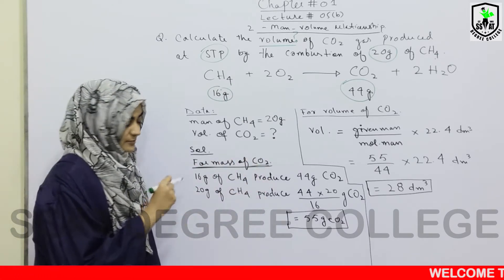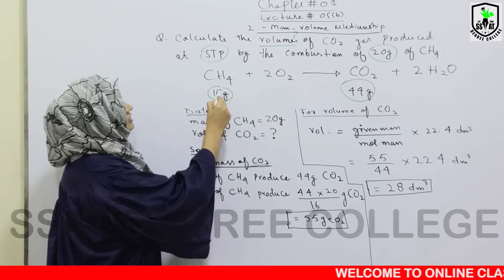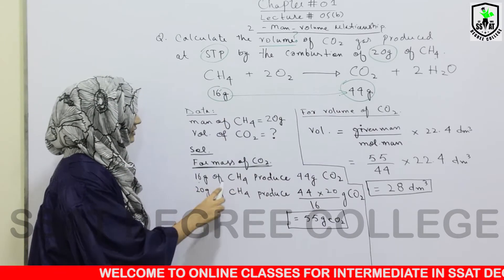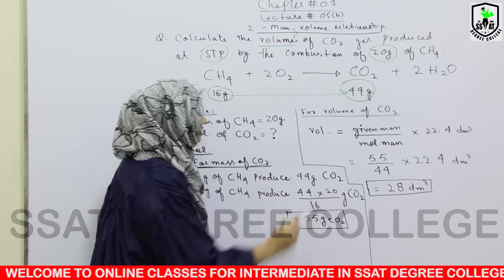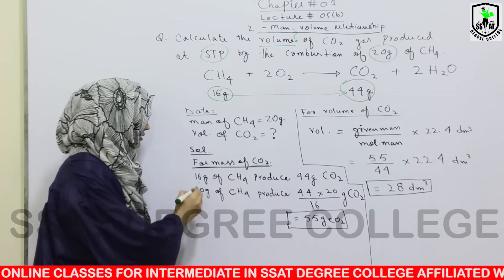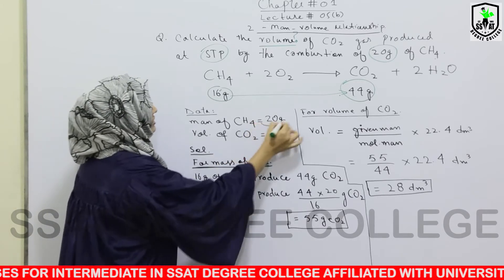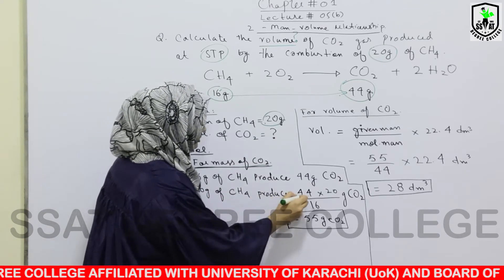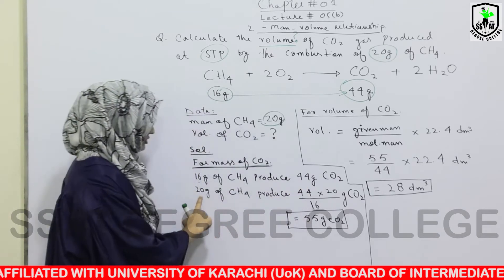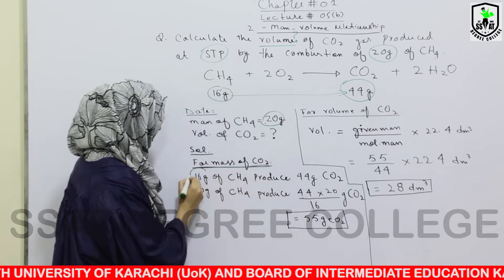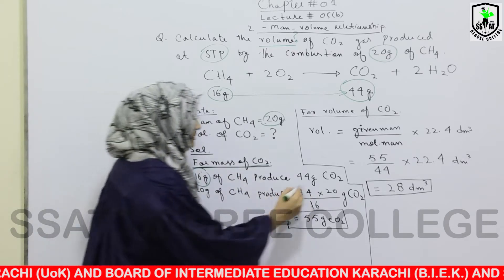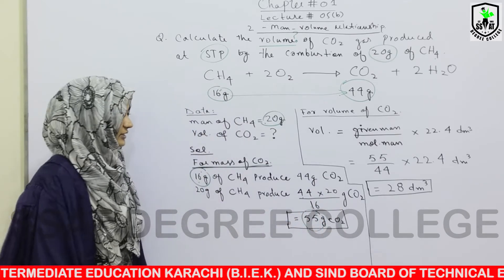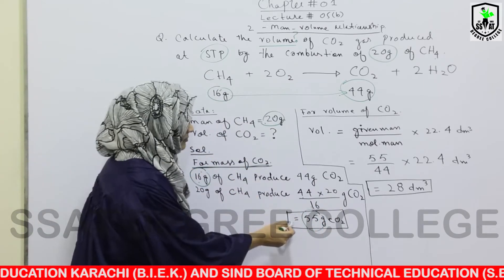Mass-mass relationship के according, जब हम equation देख रहे हैं — 16 grams methane से 44 grams carbon dioxide बन रहा है। तो 16 grams of methane produce 44 grams carbon dioxide। अगर आपके पास 20 grams methane होंगे, तो 20 को multiply करें और 16 से divide करें — जब इसको solve किया तो आपके पास 55 grams carbon dioxide आया। तो mass से mass calculate कर लिया।